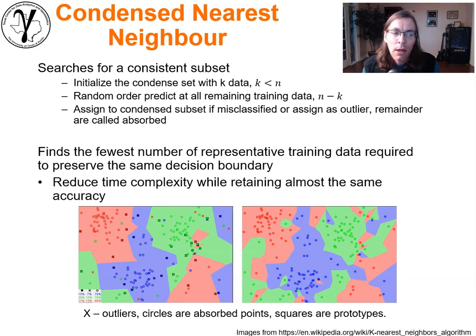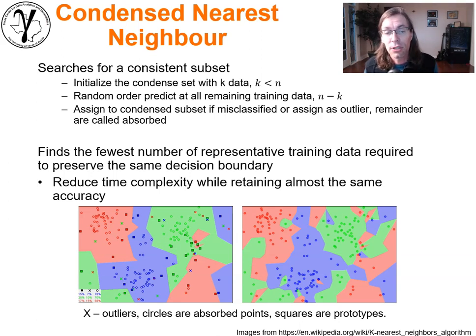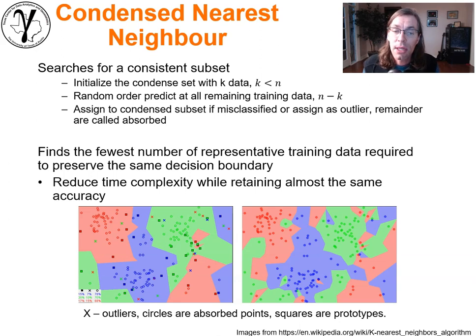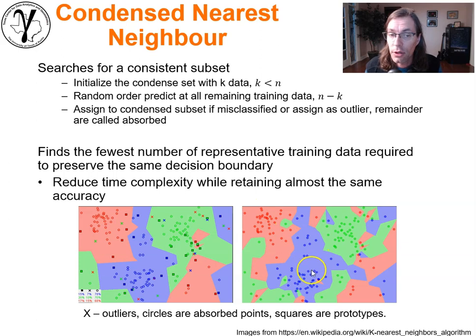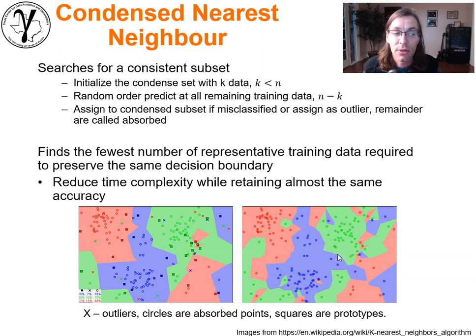First of all, we may find it computationally very expensive to work with all of the original data. One way to improve the computational efficiency — the time complexity of K nearest neighbor — is to reduce the number of training data. If you looked at an original data set, you'd recognize right away that we may not need all of that data in order to do a very good job. In fact, there's some data that are probably redundant. We could remove them and still get the same result. This is the idea with condensed nearest neighbor.